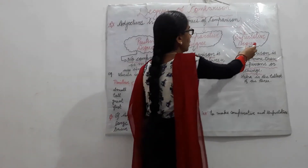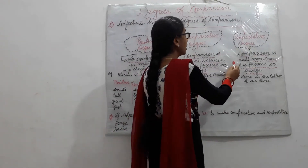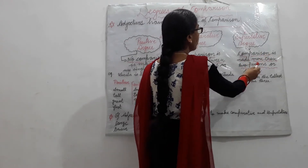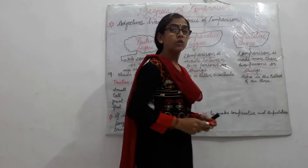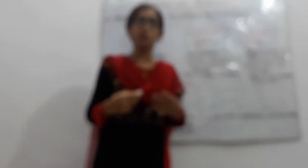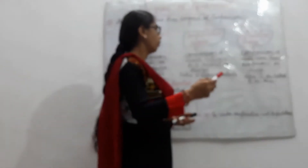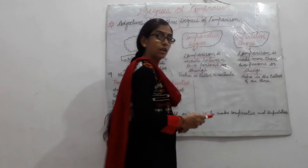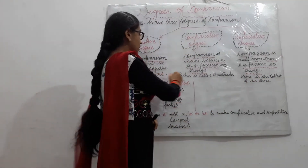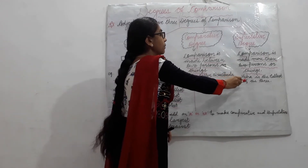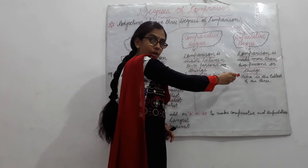Third is superlative degree. In superlative degree, comparison is made among more than two persons or things. Superlative degree mein jo comparison hota hai, woh dho ya dho se zyada logon ke ya cheezein ke beech mein hota hai. For example, 'Neha is the tallest of the three.' Neha ka comparison in teeno mein ho raha hai, aur in teeno mein Neha sab se lambi hai.